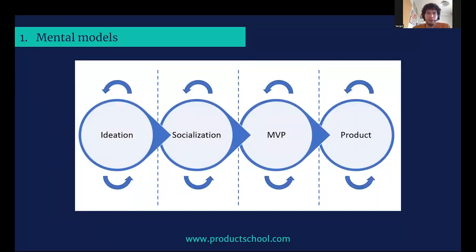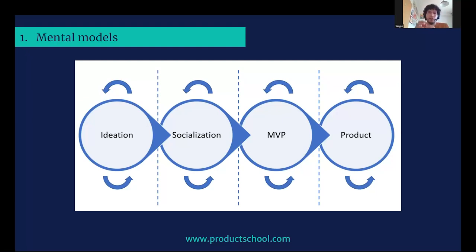This is a mental model of product development that I like to use. I did not create this — it's something I heard at a PM conference some years ago that I thought was clever, very simple, and that I've been using since. It has four different steps: ideation, socialization, MVP or minimum viable product, and then the actual product. What's interesting is that each step overlaps with the next one — while you are working on ideation, there will be a moment where you start socializing your idea, but you could go back to ideation. There's a sort of handshake between each stage.